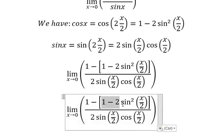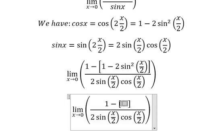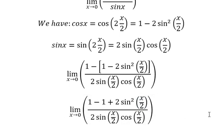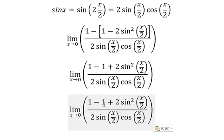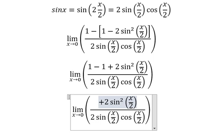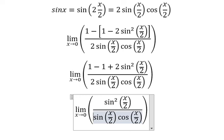This one, we need to change the sign. We get negative 1 plus 2 sin squared of x over 2. Now 1 minus 1, we cancel. 2 divided by 2, we cancel. So sin of x over 2 divided by sin of x over 2.